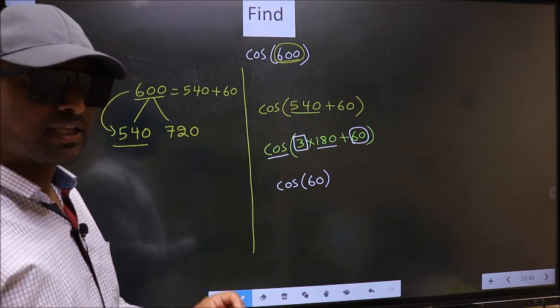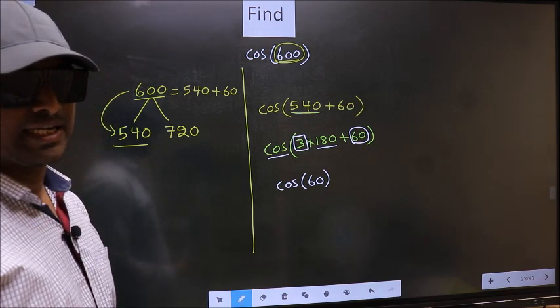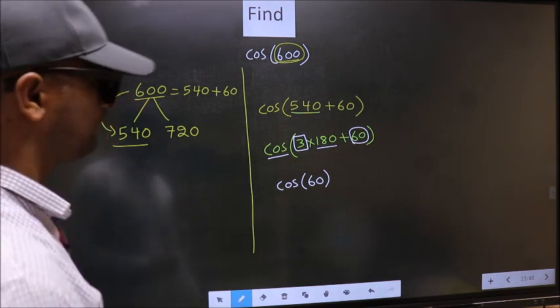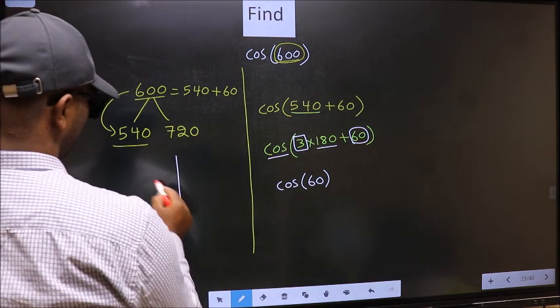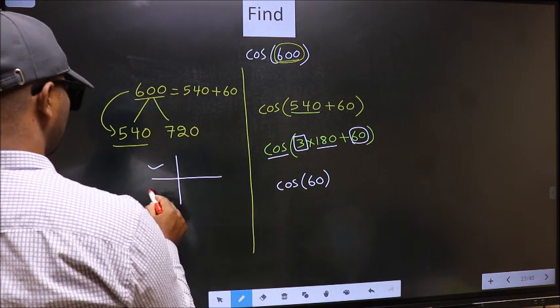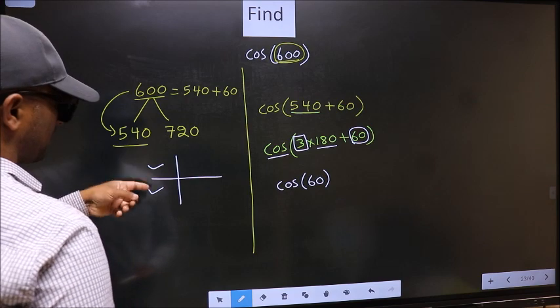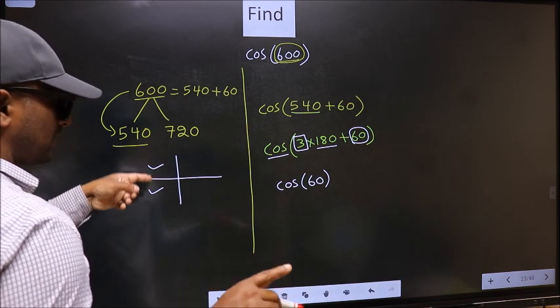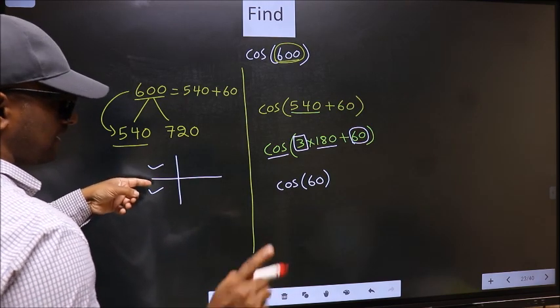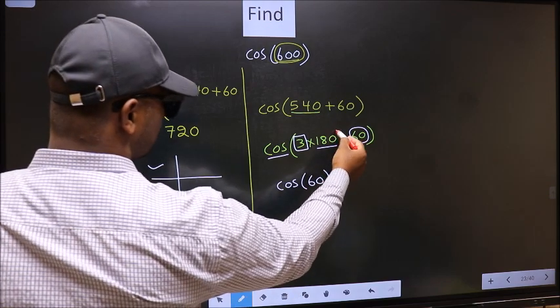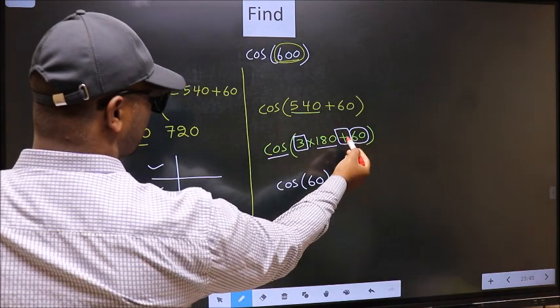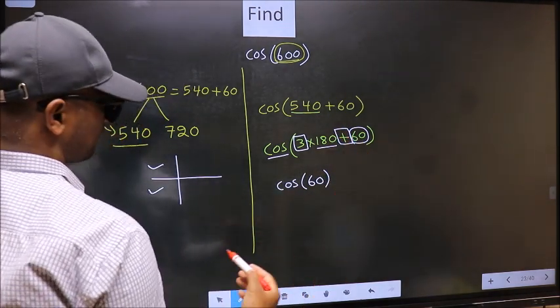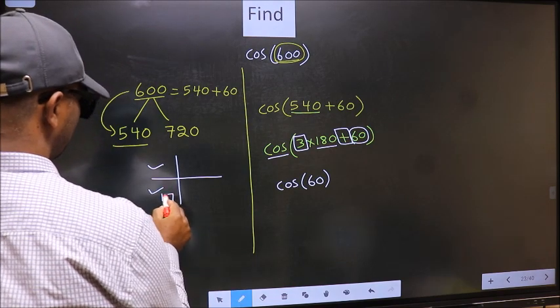And all the odd multiples of 180, they lie either in the second or in the third quadrant. So, now to select the quadrant, we should look at this symbol. Here we have plus. That means, the angle lies in the third quadrant.